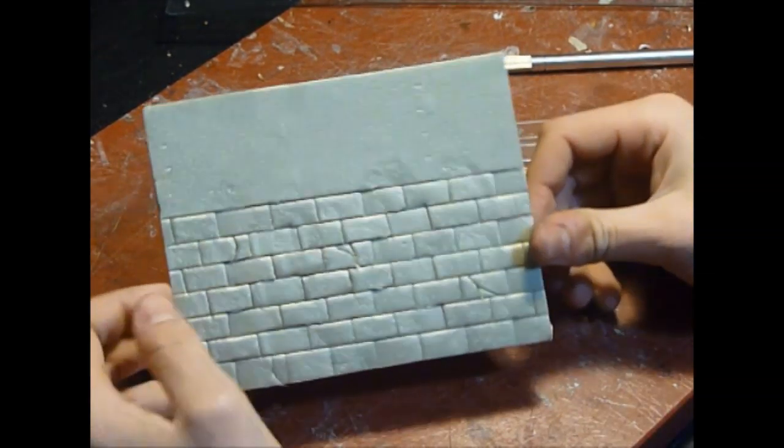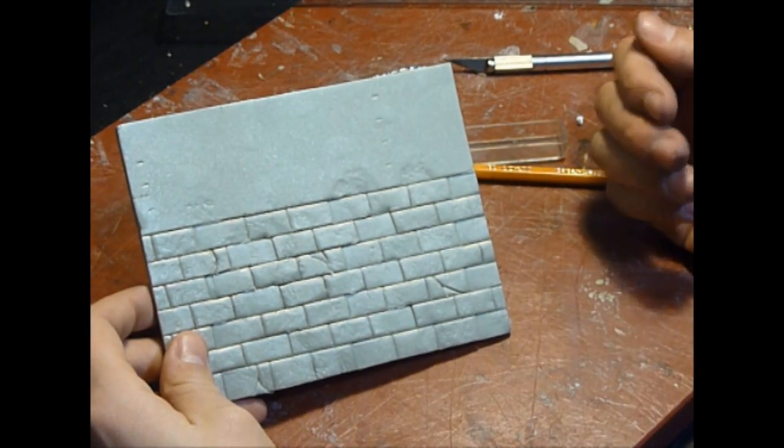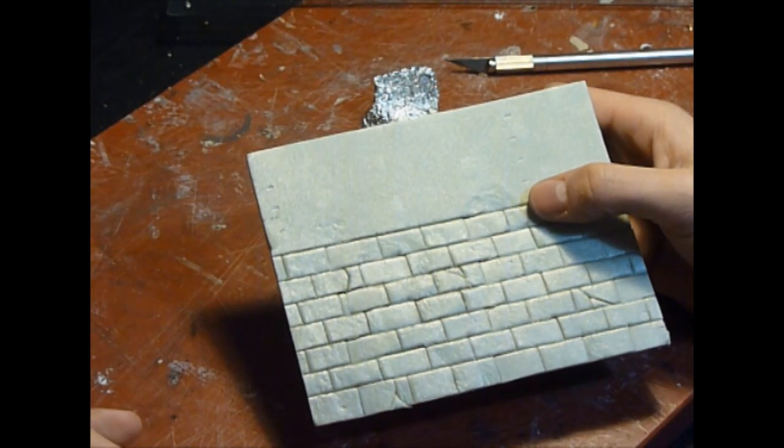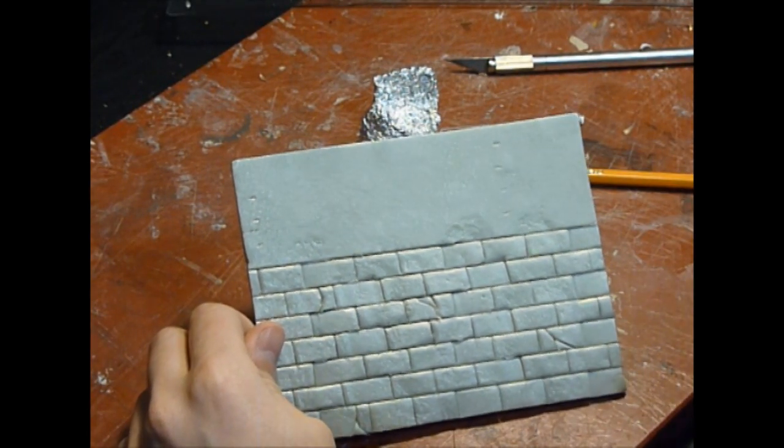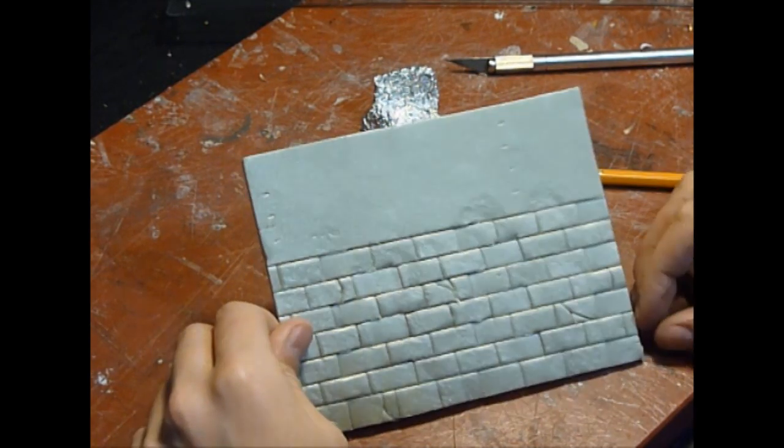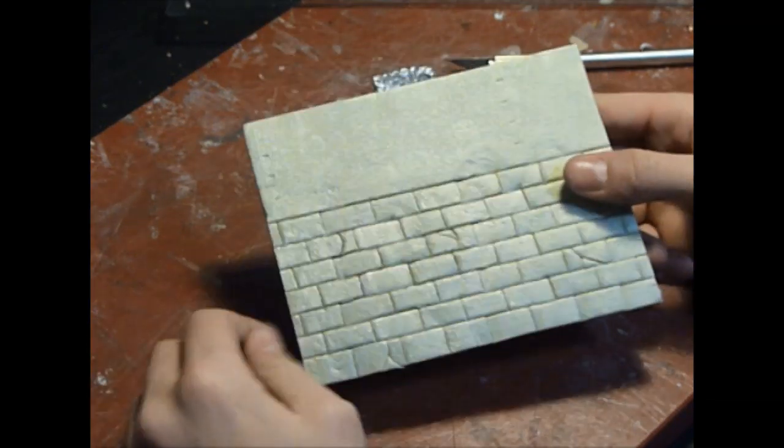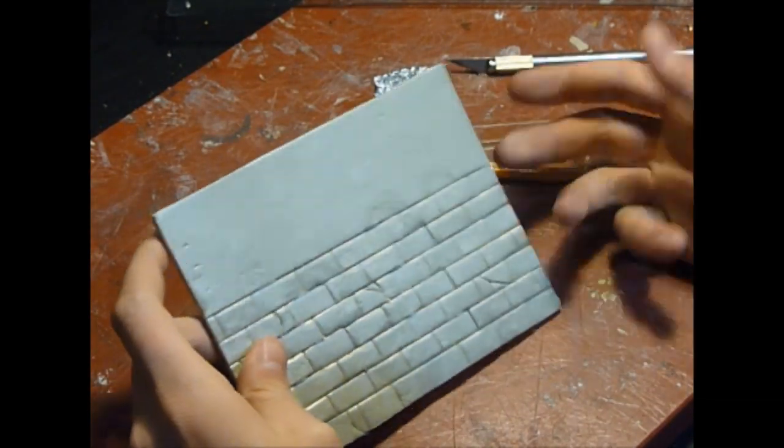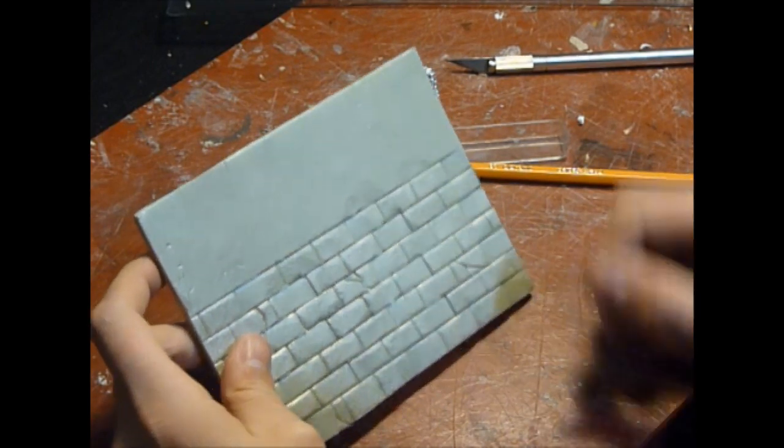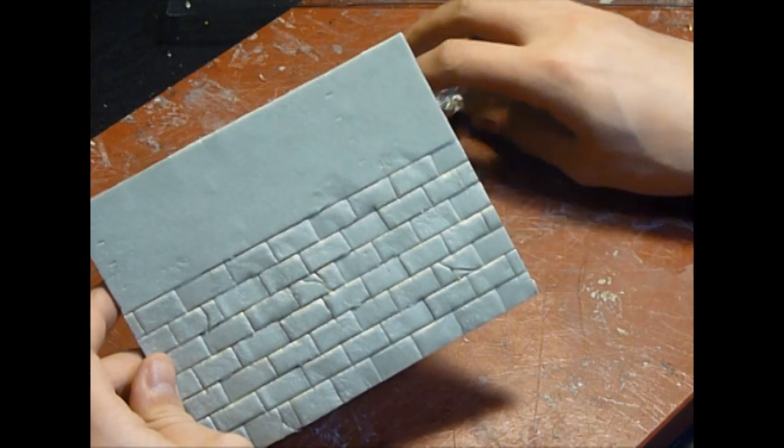Next, what you do generally is you'd paint that. You could give it a base coat of black and then simply just give it a dry brush of grey over. That really brings out the detail quite well. I don't think I have a model to show you of that, but it's really simple. You can do different sorts of coloring if you want a sandstone effect or a limestone.